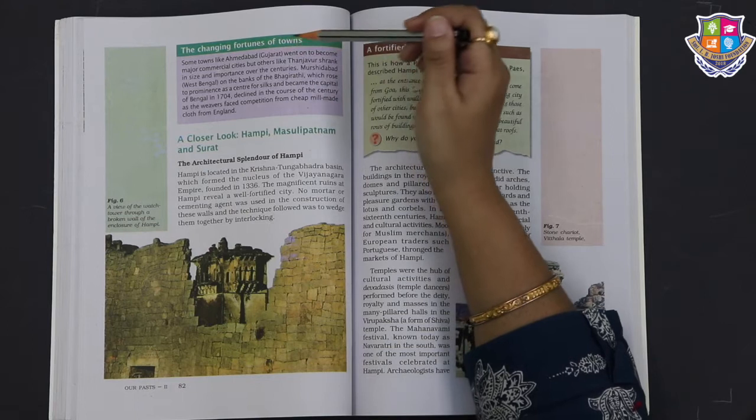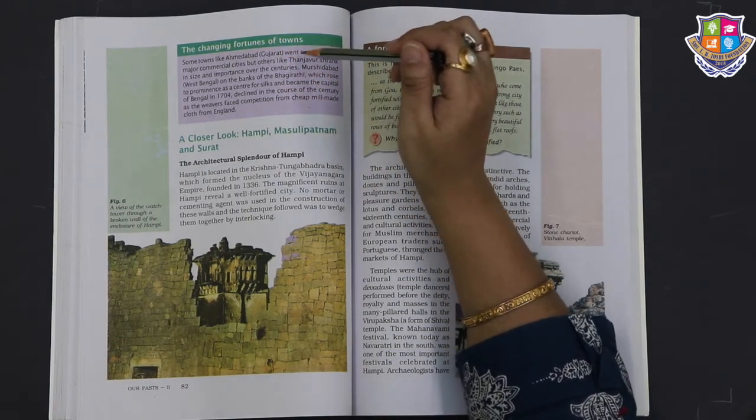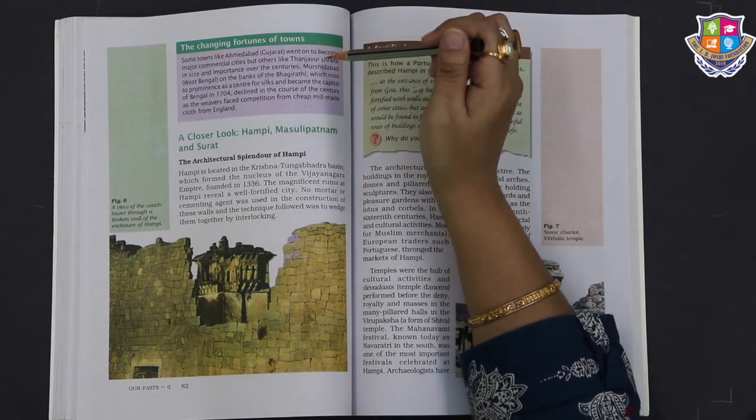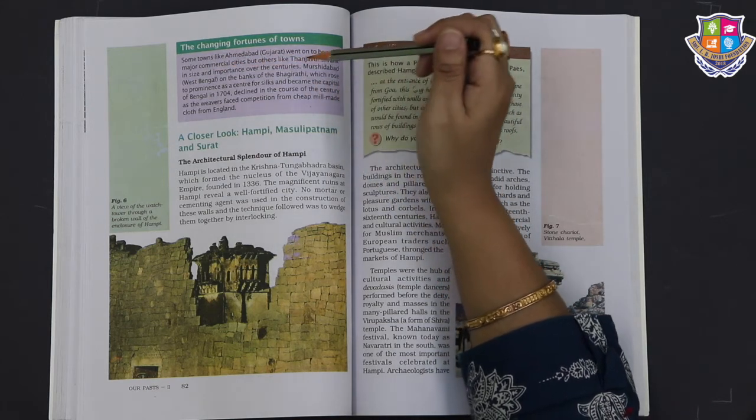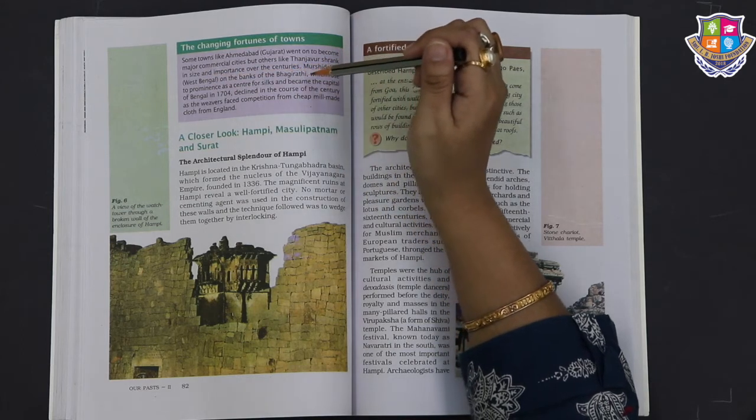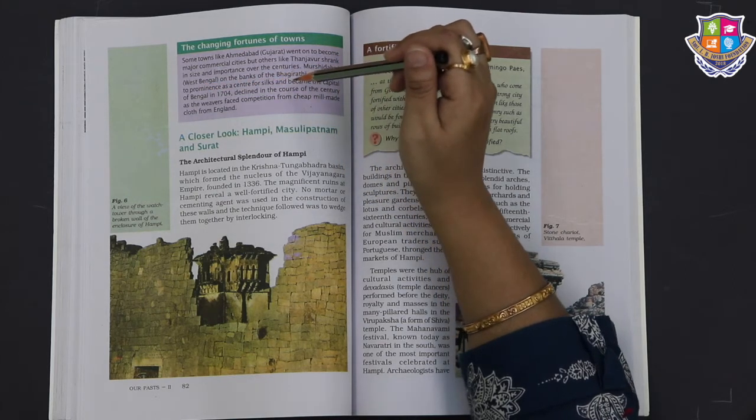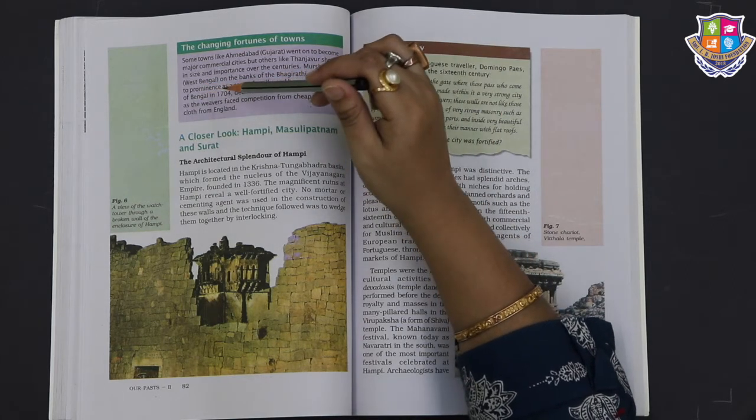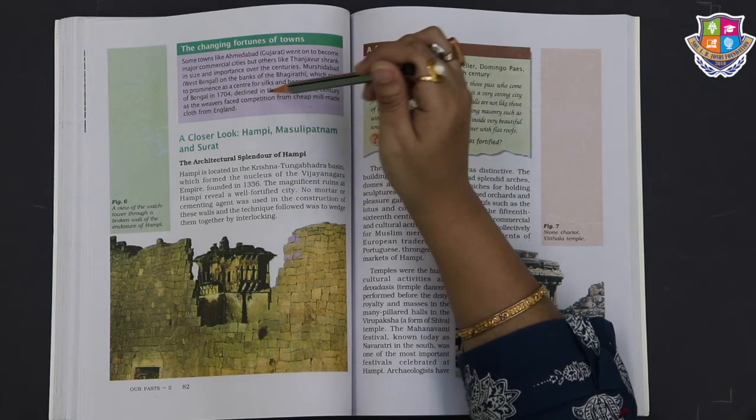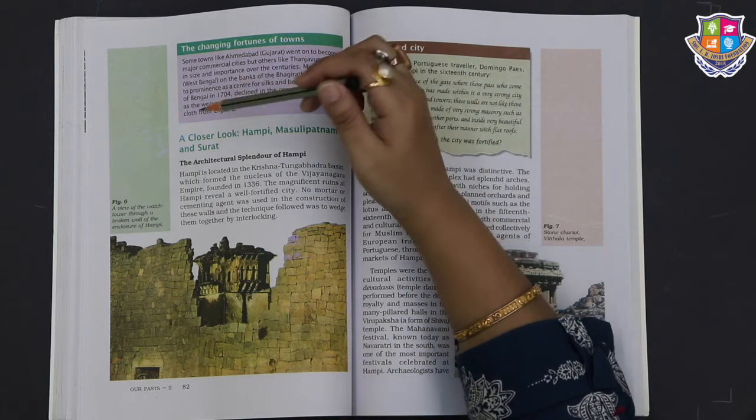The changing fortunes of towns. Some towns like Ahmedabad in Gujarat went on to become major commercial cities, but others like Thanjavur shrank in size and importance over the centuries. Murshidabad in West Bengal, on the banks of the Bhagirathi, rose to prominence as a center for silk and became the capital of Bengal in 1704. It declined in the course of the century as the weavers faced competition from cheap mill-made cloth from England.